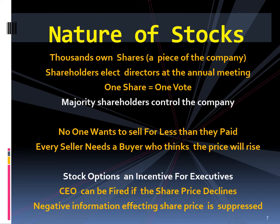The shareholder with the most shares has the greatest control over who becomes directors and in turn who controls the company. No shareholder wants to sell their shares for less than what they paid for them. Every seller is a pessimist who thinks the stock has reached its height, and every buyer is an optimist who thinks the price will go higher. The executives are usually given stock options, which are generous incentives for increasing the share price. It is not unusual for a chief executive who is unable to increase share prices to be replaced by the directors.